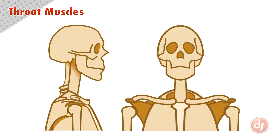The first of these structures is the hyoid bone. This is a small u-shaped bone that curves around the throat. It floats in the upper part of the neck, acting as an anchor for many neck muscles, and it also helps us swallow, breathe, and speak.